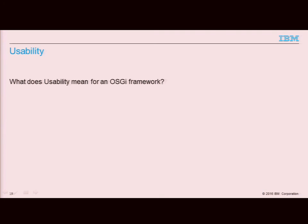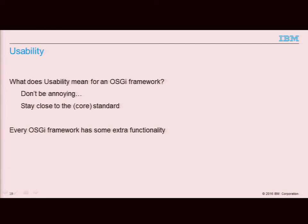All right. So, that was performance. The next thing that you might care about is usability. And usability is really difficult to define for an OSGi framework, because what does it really mean? In the end, that's a piece of infrastructure that most people don't even want to see — it's something that enables the application, but it's not key. So, our definition of usability for an OSGi framework is simply: don't be annoying. And what does it mean to not be annoying? Stay close to the standard. If you implement too much special sauce, people will confuse your features with standard features, and they will have a bad experience if they ever try to run it on a different platform.